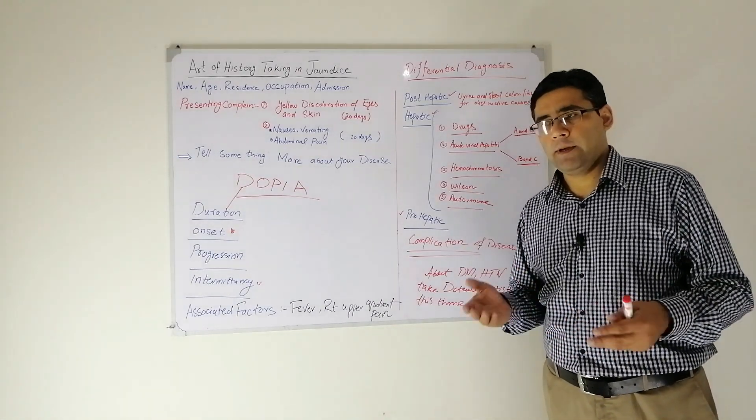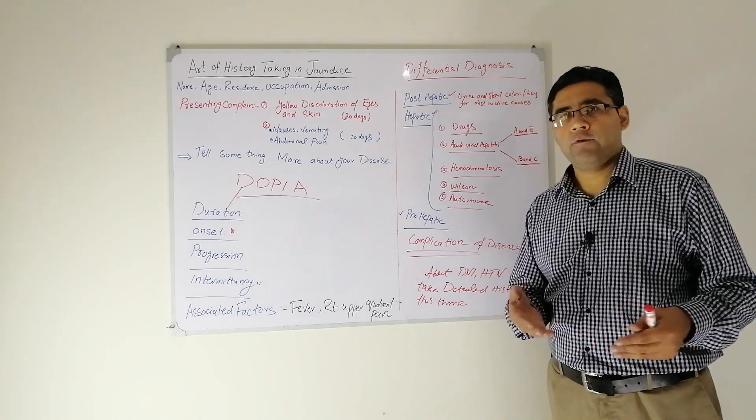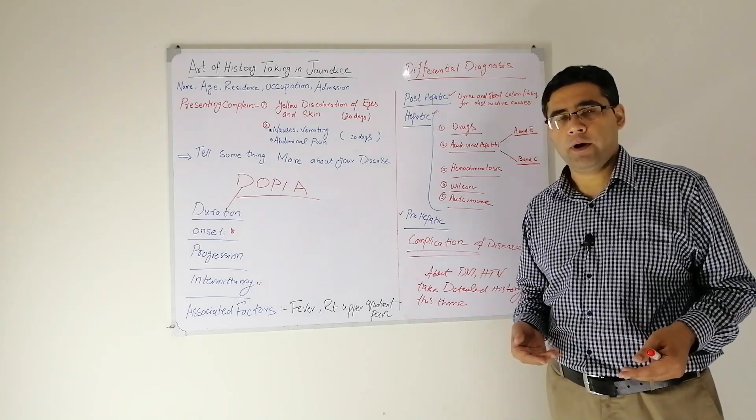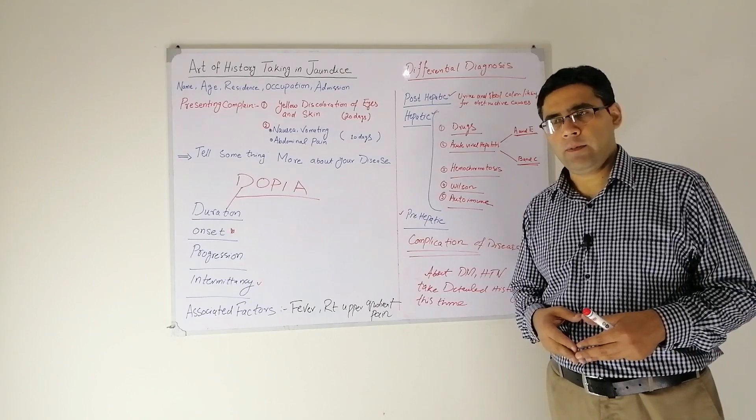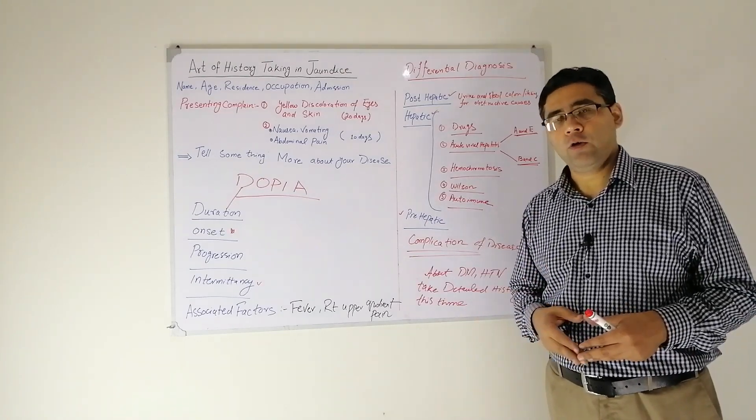You will ask the patient if there is any history of bruises over the body or bleeding from any site of the body due to coagulopathy.